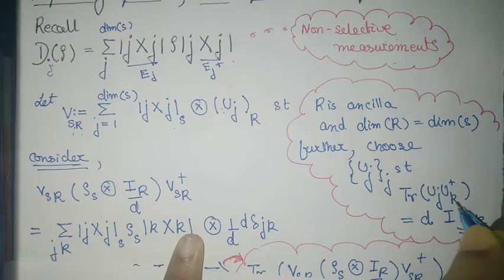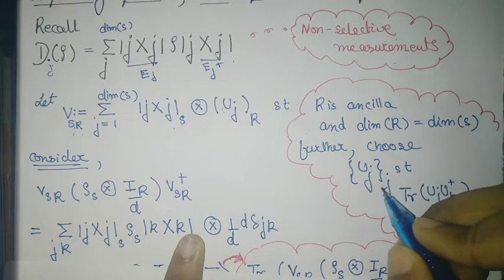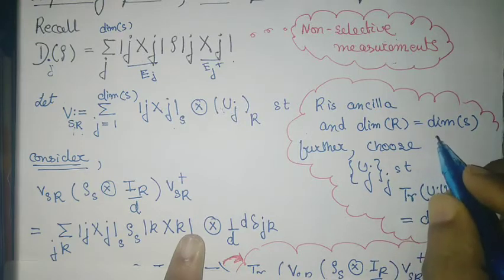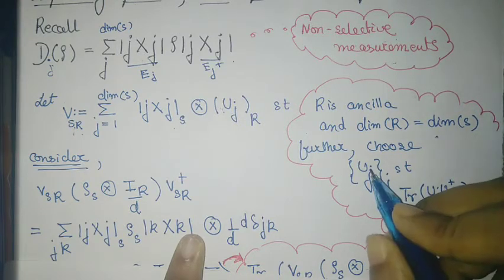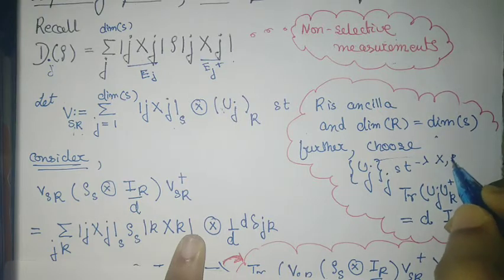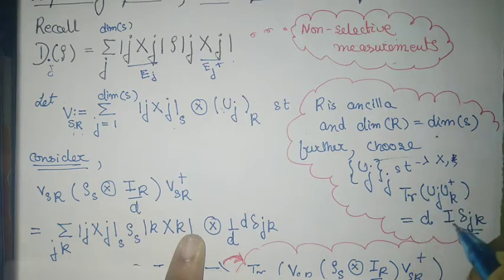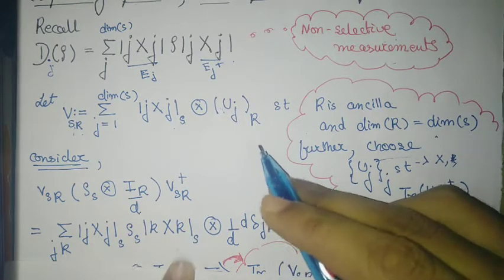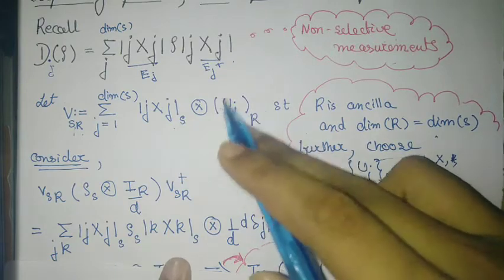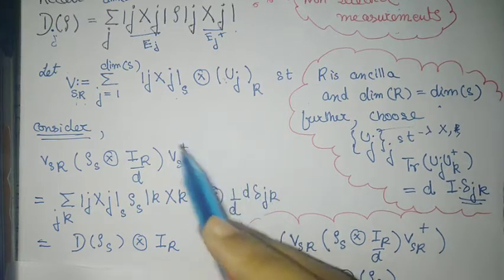This Kronecker delta relation holds mainly because in any Hilbert space you can find a set of unitary operators whose cardinality equals the dimension of that Hilbert space. The example in the two-qubit space is simply the Pauli operators — X, Y, and Z — which are unitary operators and satisfy exactly such orthogonality relations.